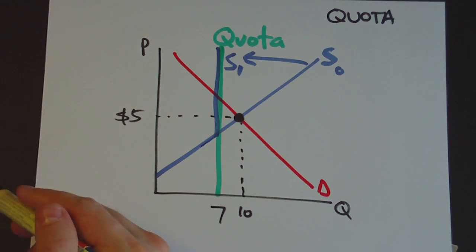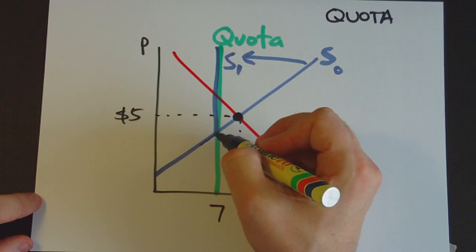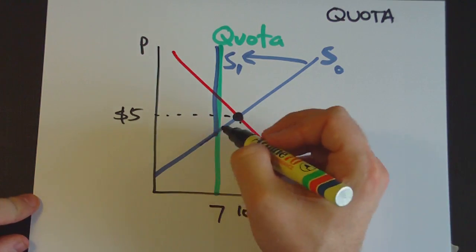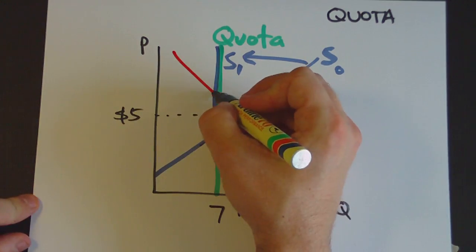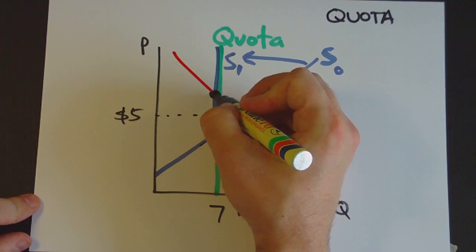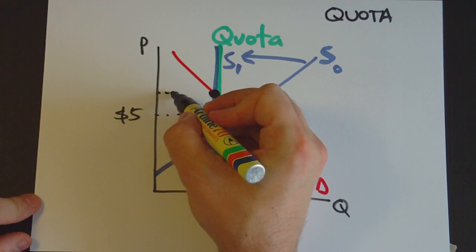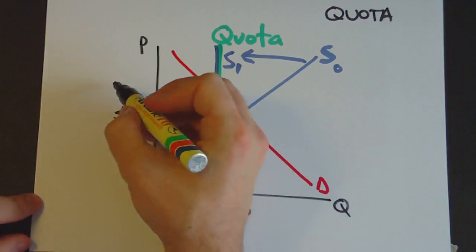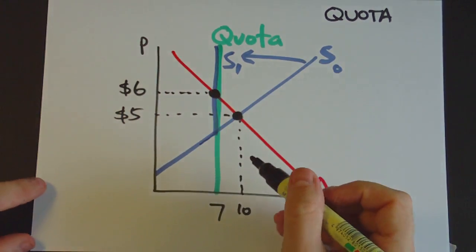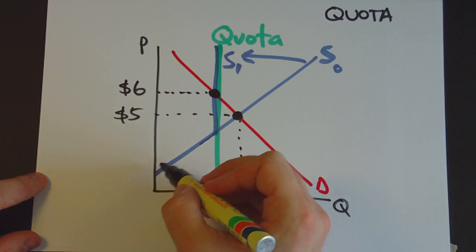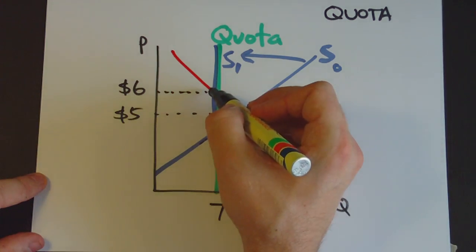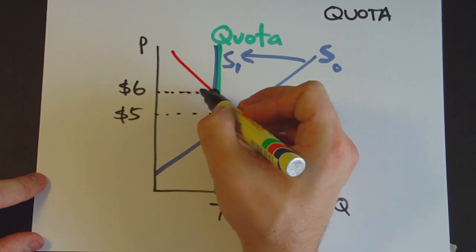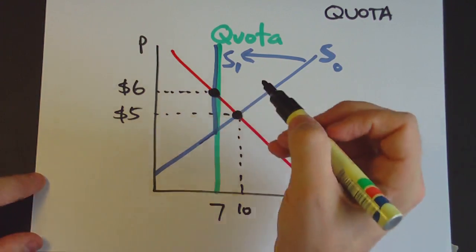So we need to ask ourselves, where is the market going to operate? Well, if there's only 7 units being supplied, then it would be silly to only charge $4 for the good, because there's a whole lot of buyers up here who are willing to pay a lot more. So the market actually operates at this point here — let's assume that's roughly $6. Buyers are willing to pay $6 for that quantity, and so the market actually operates at that point.